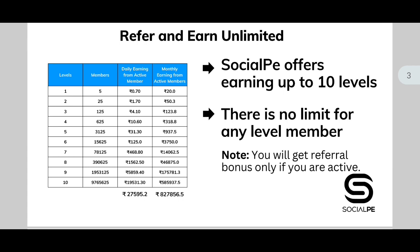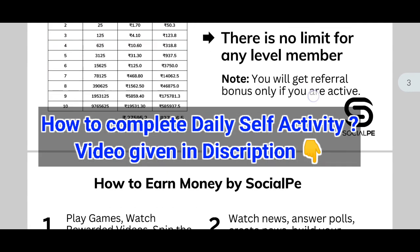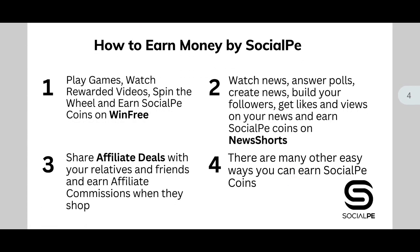You have to do your self-activity daily — only two to three minutes. To learn how to complete self-earning tasks in the Social Pay application, the video link is given in this video description. Please go and check how to complete self-earning in Social Pay.